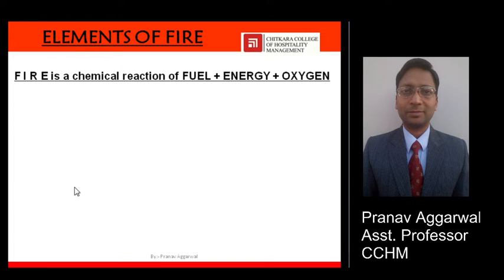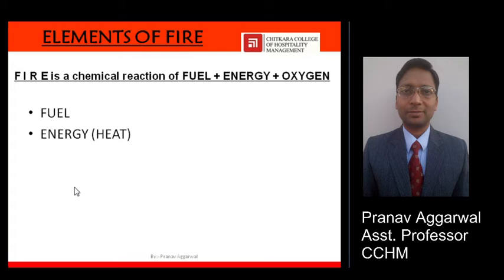We have just seen that fire is a chemical reaction. For that reaction, there are three things that are required. Those three things are called the elements of fire — these are fuel, energy, and oxygen. Fuel means something that is a combustible material that can be burnt — anything that can burn is fuel for the reaction of fire to take place. The second element required is energy, and here that energy is heat energy.